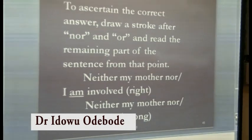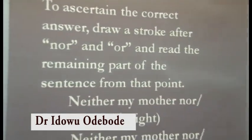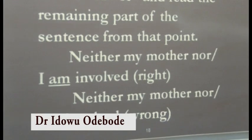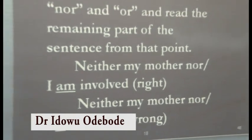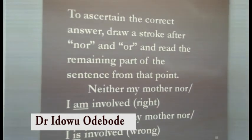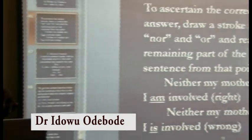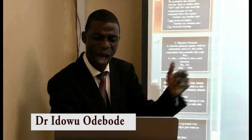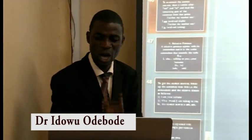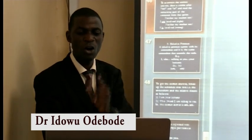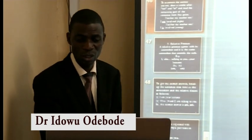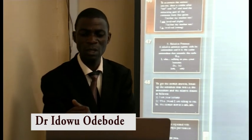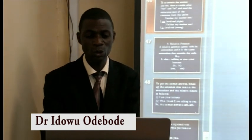To ascertain the correct answer in neither/nor and either/or constructions, draw a stroke after 'nor' or after 'or', and read the remaining part of the sentence from that point. For example: 'Neither my mother nor I am involved' is correct. 'Neither my mother nor I is involved' is wrong — because reading after the stroke gives 'I am involved', which is correct, not 'I is involved'.